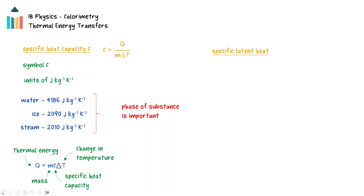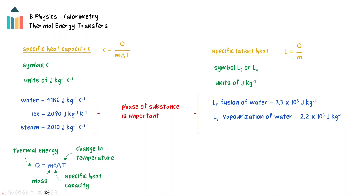The specific latent heats of fusion and vaporization of a substance are the energy needed to change the phase of one kilogram of the material at its melting or boiling point respectively. It has the symbol capital L and units of joules per kilogram. The formula q equals mL relates the energy q required to change the phase of a mass m of a substance with a specific latent heat L.